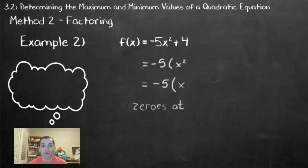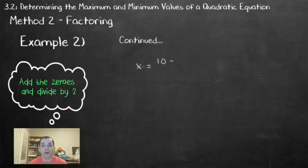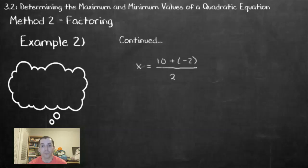Now that I have both of my zeros, we can add them together and then divide by 2 in order to find the equation of the axis of symmetry. 10 plus negative 2 divided by 2: 10 plus negative 2 is equal to 8, and 8 divided by 2 is 4.